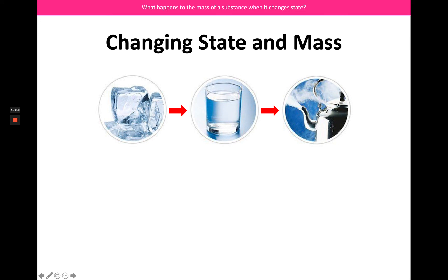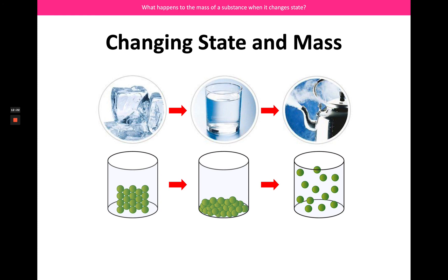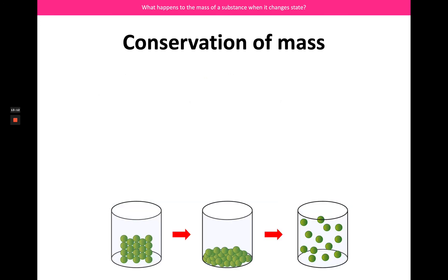Thinking about those changes of state — we've got our ice turning into water, turning into steam, and there are our particle models to reflect those different states. One thing we've got to appreciate is that even though we're changing from particles being closely packed to being far apart, the number of particles is not going to change. So if we had 10 grams of ice and turned it all into water, we would still have 10 grams. And if we turned all of that water into steam, we would still have 10 grams. When we change state, the number of particles has to stay the same — it's just their arrangement and their energy that's different, but they don't vanish. This is called the conservation of mass.